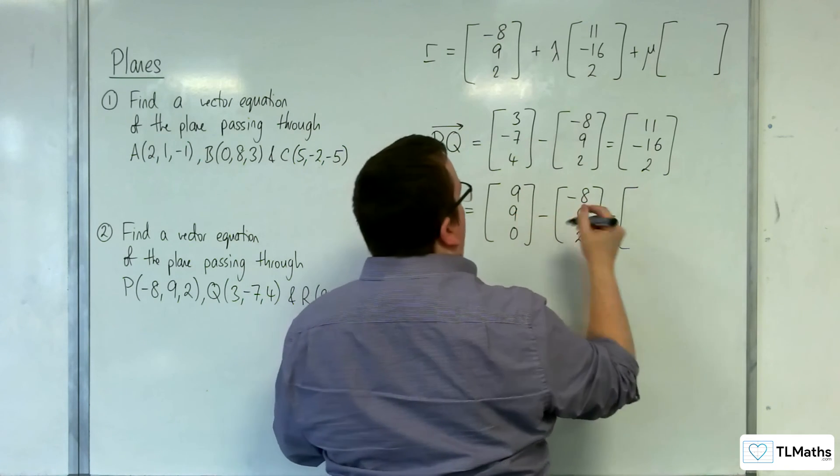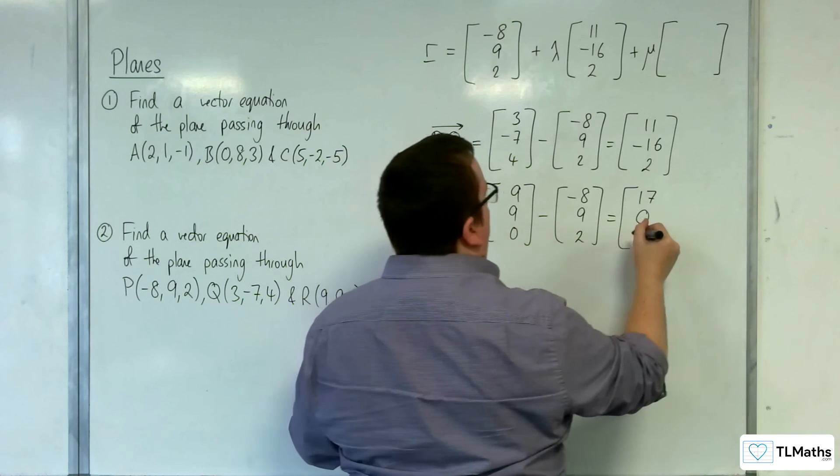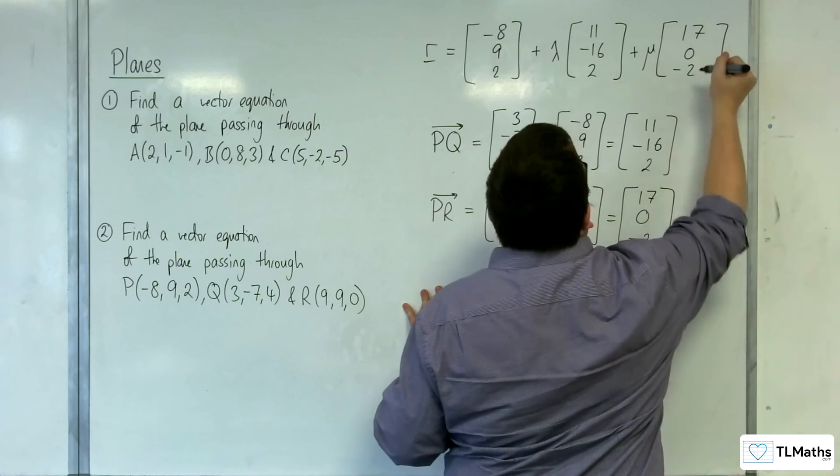So 9 take away minus 8 is 17. 9 take away 9 is 0. 0 take away 2 is minus 2. So 17, 0, minus 2.